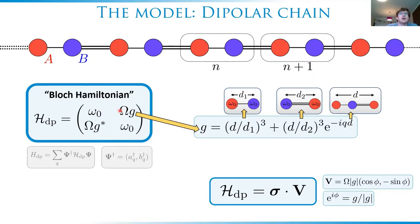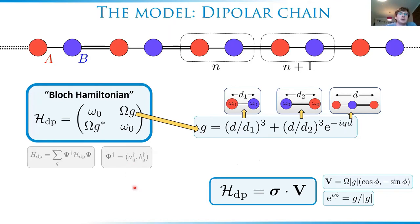Capital omega describes the quasi-static Coulomb dipole-dipole interaction strength. G encodes the geometry of the lattice — we see spacings d1, d2, and in the phase factor we see d, the length of the unit cell. This block Hamiltonian is in the basis of creation and annihilation operators that create and annihilate collective plasmonic modes with wave vector q on the A and B sub-lattices respectively. It can be represented in the basis of Pauli matrices, where sigma is a vector of Pauli matrices and v is a vector that parameterizes the Hamiltonian.